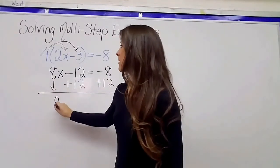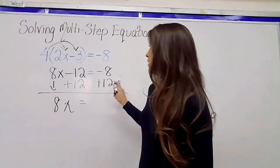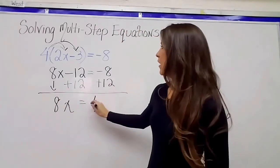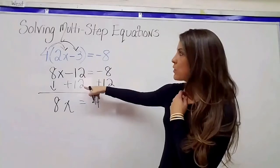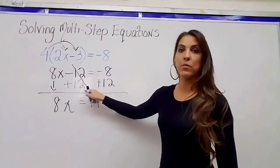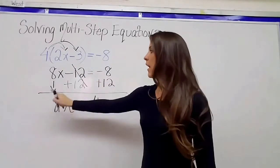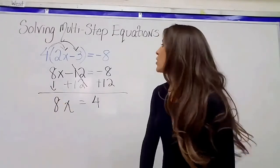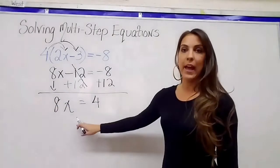My new equation is going to be 8x equals negative 8 plus 12 is 4. The negative 12 and the 12 canceled out because negative 12 plus 12 is 0, and then 0 plus 8x is just 8x. So we are one step away now from getting x by itself.